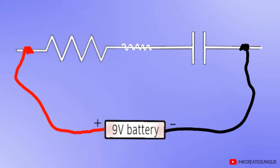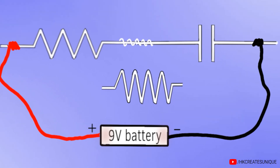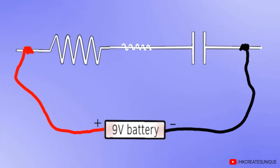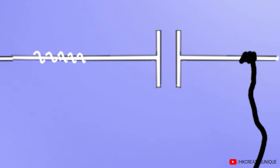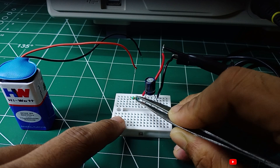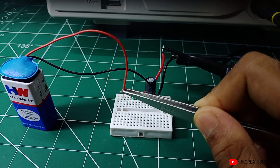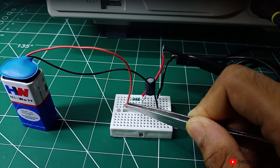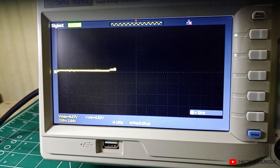To increase time, we can connect a higher value resistor. You can also use a higher value capacitor to increase time. Now in my circuit, if I connect a 68 kilo-ohm resistor instead of 10 kilo-ohms and connect the battery, the capacitor takes more time to increase voltage across it.